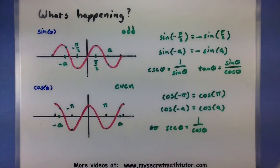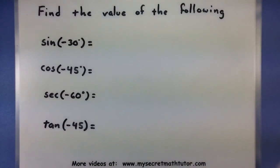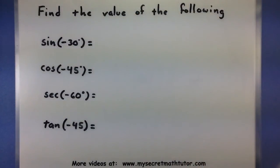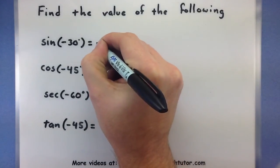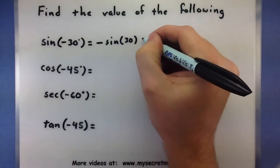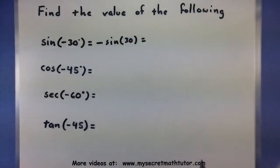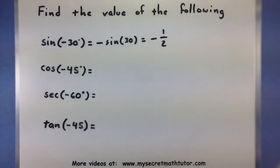Let's look at some examples and put these identities to work. I want to figure out the value of sine, cosine, secant, and tangent — and notice how in all of these, I put in a negative angle. So the sine of negative 30 degrees, according to the identity, is the same as sine of 30 degrees, just with a negative sign out front. Sine of 30 degrees is 1/2, and with the negative sign out front, this gives negative 1/2.